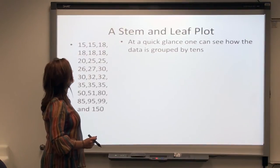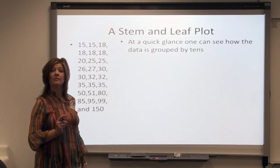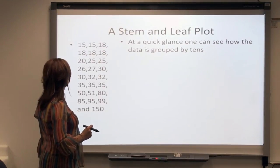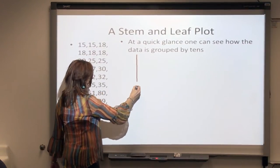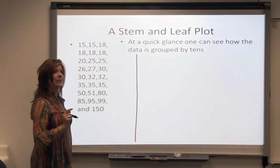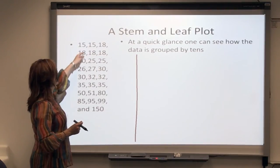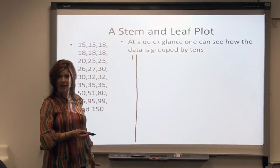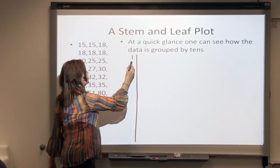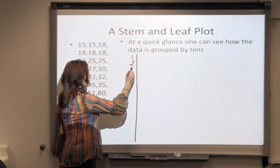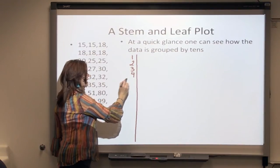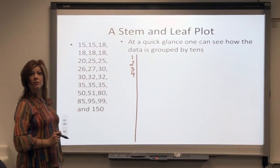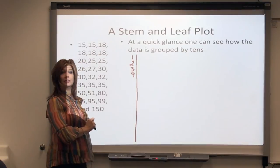A stem and leaf plot is pretty easy to construct and gives us a quick glance to see how that data, how the incomes are distributed in groups of 10. I'm going to list how many are making incomes between $10,000 and $20,000, and then how many are making in the $20,000, in the $30,000, in the $40,000 and so on. My top income earner is $150,000, so I'll need to go all the way up to 15.